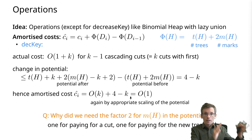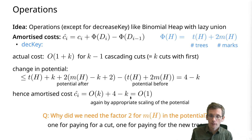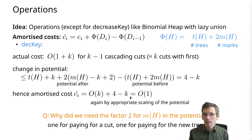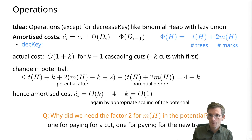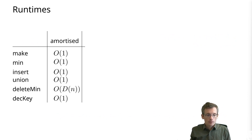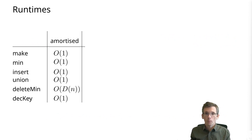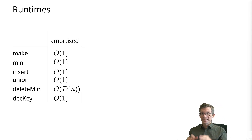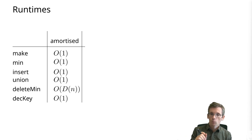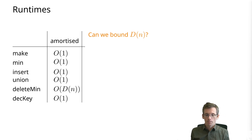We've analyzed the amortized running time of all operations. In particular, decrease-key is O(1) amortized. Looking at the overview: we have amortized O(1) for all operations except delete-min, where we had O(D(n)) — and D(n) is the bound on the maximum degree. What remains is bounding D(n).